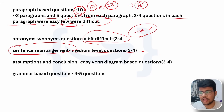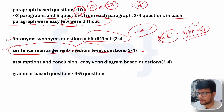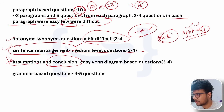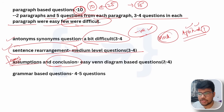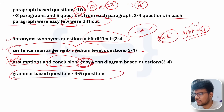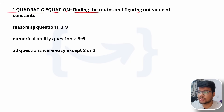Sentence rearrangement questions are covered in my uploaded aptitude one-shot videos. Assumptions and conclusion is a very famous and important topic — also covered. Venn diagram questions were three to four, all very easy. Grammar-based questions were four to five, straightforward. So that completes the verbal ability blueprint. Now for advanced aptitude: one quadratic question involved finding the roots and figuring out the value of constants.